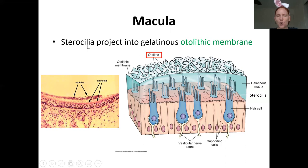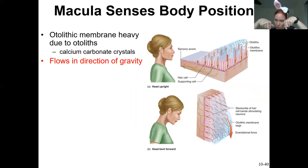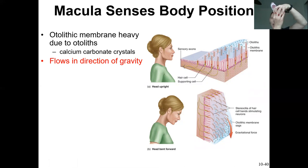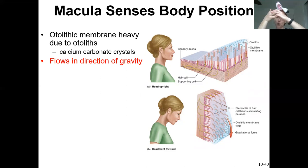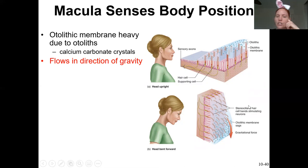Those calcium crystals make the otolithic membrane heavier. What the macula senses is gravity — downward pull — and any kind of linear changes in motion. When you look down, for example, the heavy otolithic membrane flows downward, bending the stereocilia. Bending the stereocilia activates the hair cells, sending a signal to the brain.